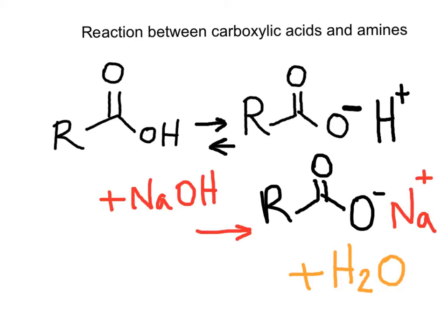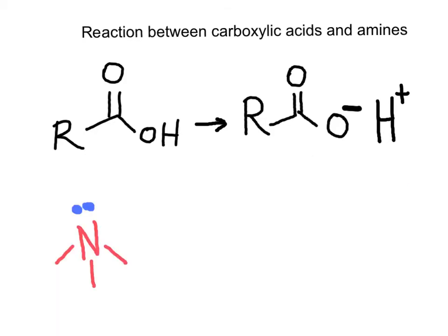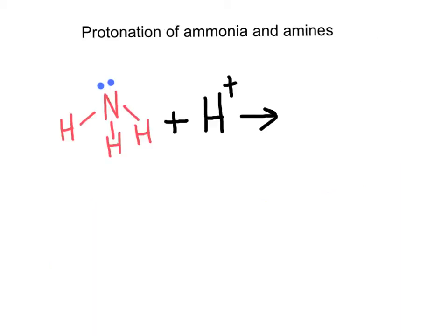A carboxylic acid can react with a solution of sodium hydroxide to form a carboxylate salt. Because nitrogen-containing compounds are weak bases, they can also react in a similar way, where the carboxylic acid will be a proton donor — that is, the nitrogen will be abstracting the proton from the carboxylic acid. We have seen in the chapter of amines how a nitrogen can be protonated to form an ammonium ion.